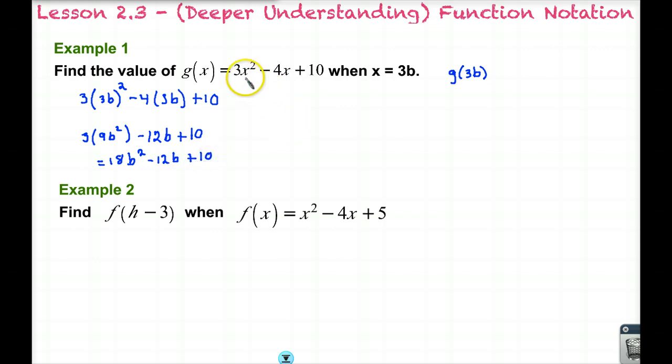Notice, as we stated before, the x's are now substituted with 3b, so we no longer have x's in our equation. Let's try this final example. In this example, it says find f(h - 3). So find the function f when our x values are replaced with h - 3. This one we have to be very careful because we have to make sure that our parentheses are in place: (h - 3)² - 4(h - 3).